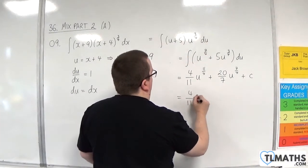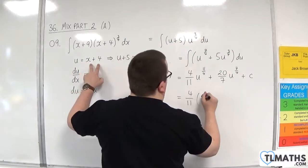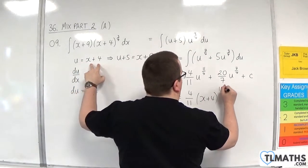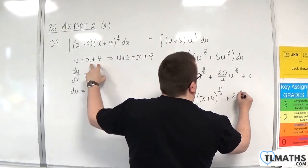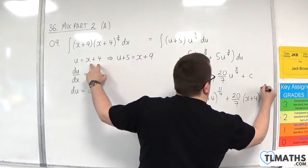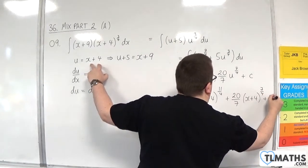And now, substitute the u back in, which was x plus 4. So we get 4 elevenths x plus 4 to the 11 quarters, plus 20 over 7 x plus 4 to the 7 quarters, plus c.